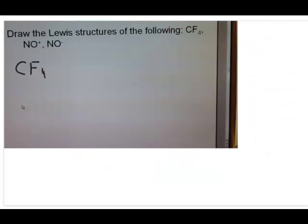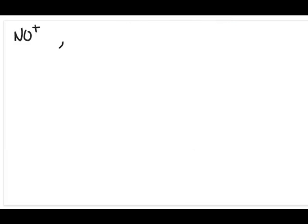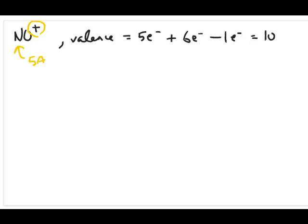Now let's go to example number two: NO+. We follow the same steps. Nitrogen is group 5A, so it has five electrons; oxygen is group 6A, so it has six electrons. The positive charge means we subtract one electron, leaving us with ten electrons total. This is a structure with no particular central atom since you only have two atoms, so they have to be bonded to each other.